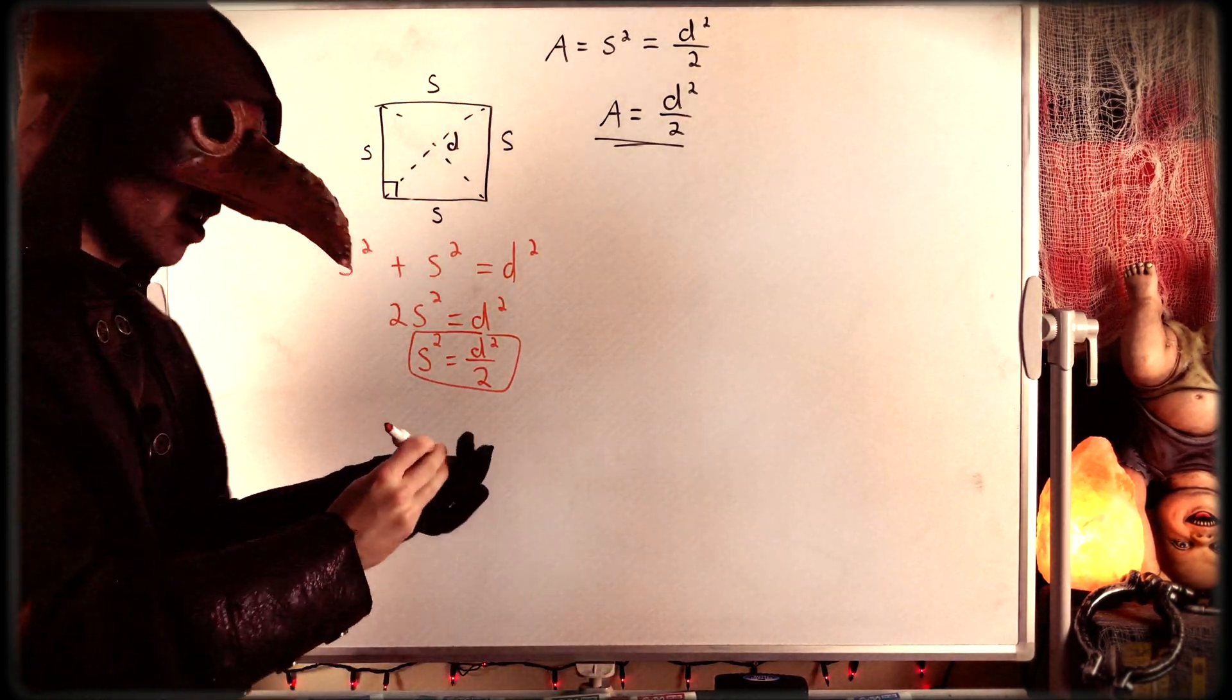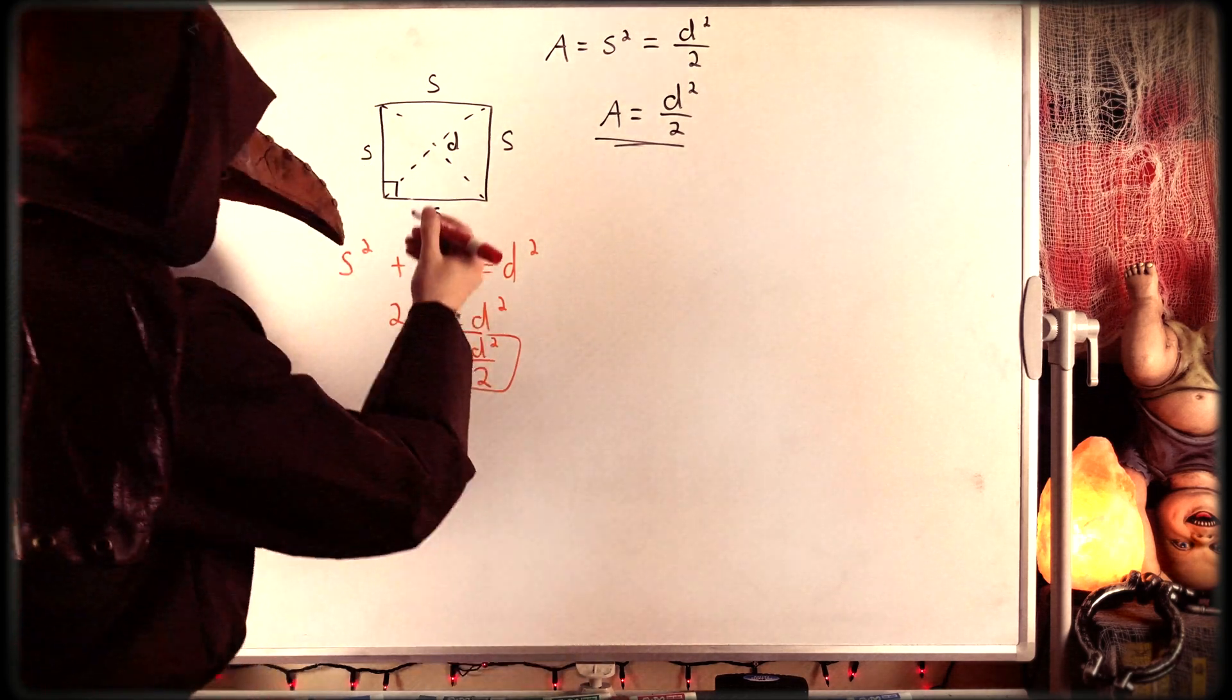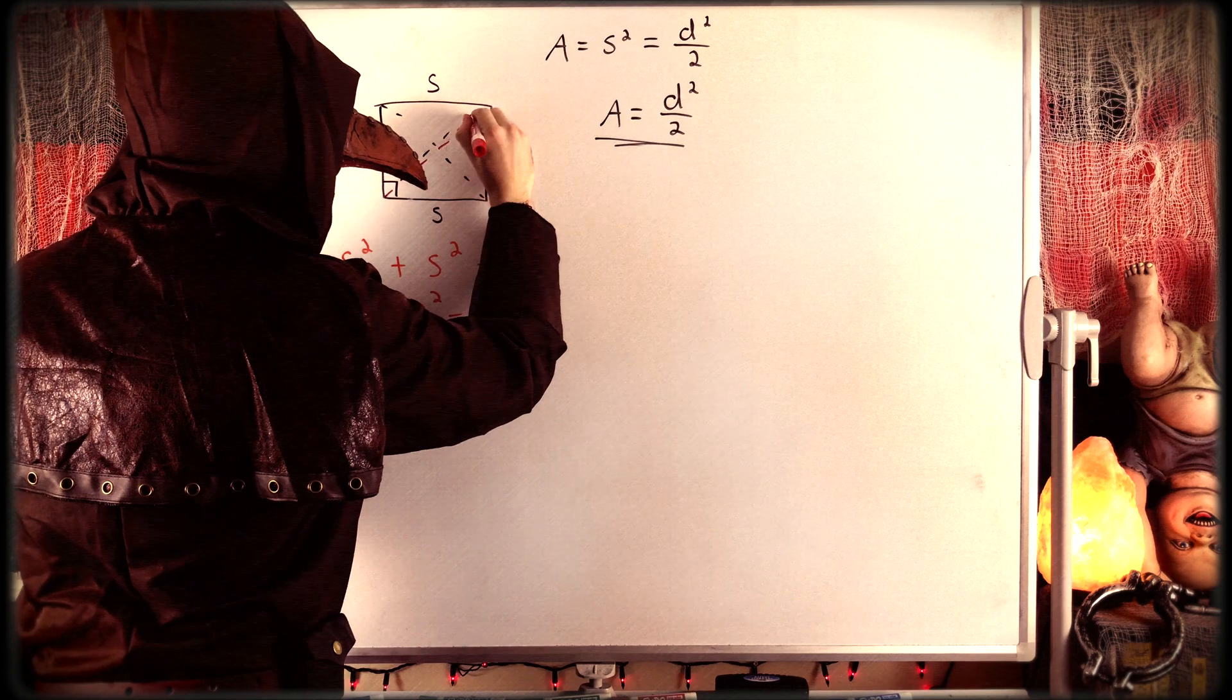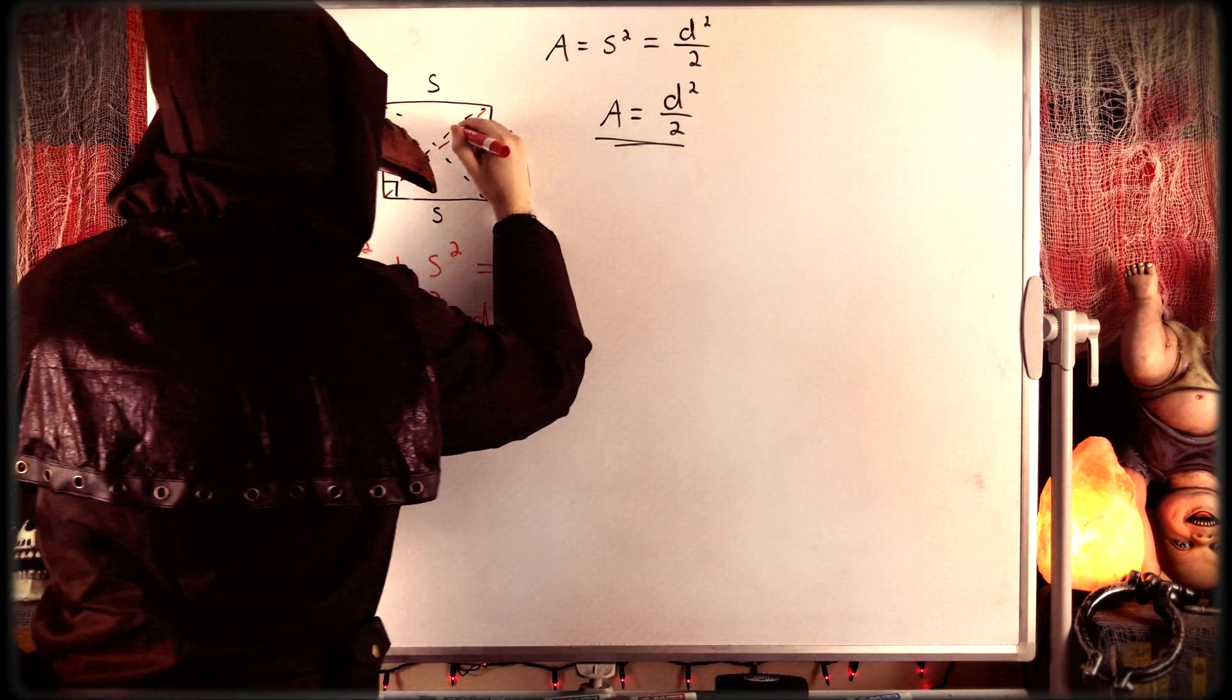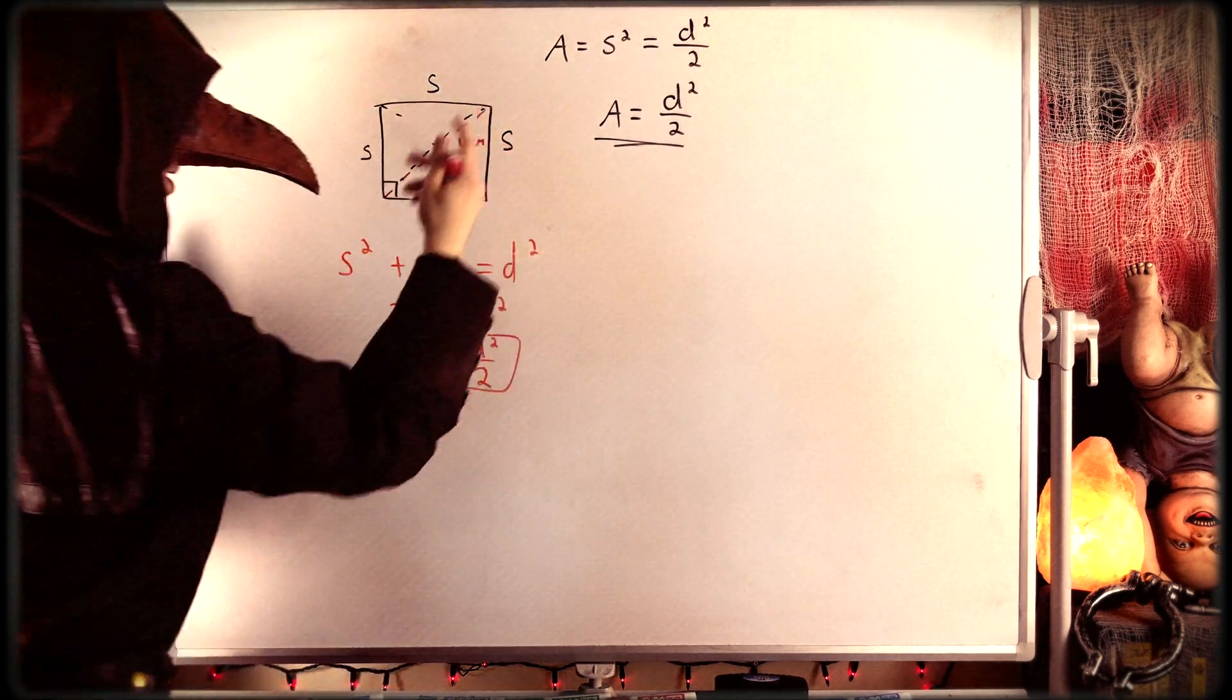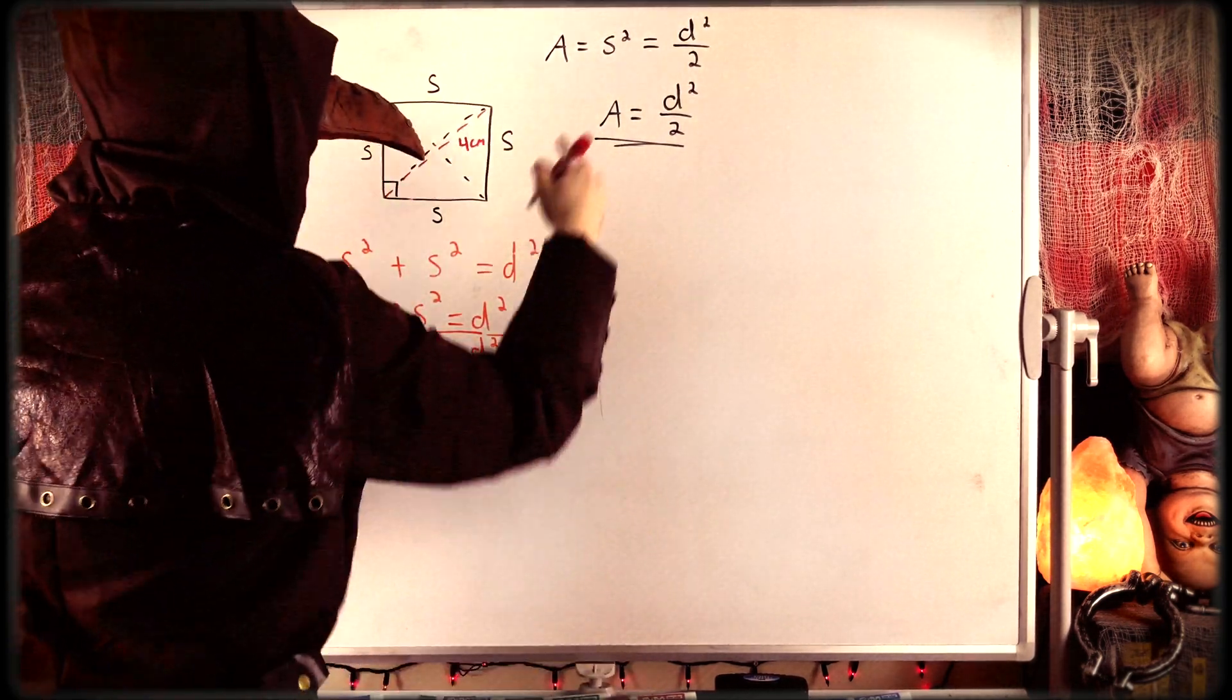All right, now before we go, let's just quickly see an example. Let's say the diagonal of our square D, and I'll just draw it in red here. The diagonal D, I know it's getting a little cluttered but we're almost done. Let's say the diagonal has a length of 4 centimeters. That is our diagonal length.